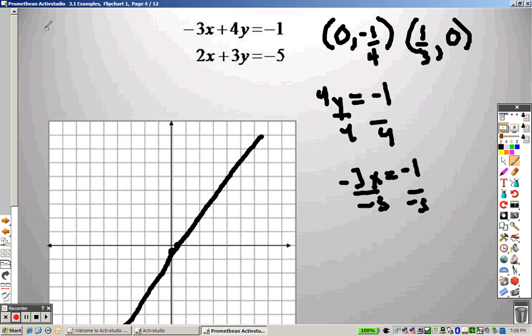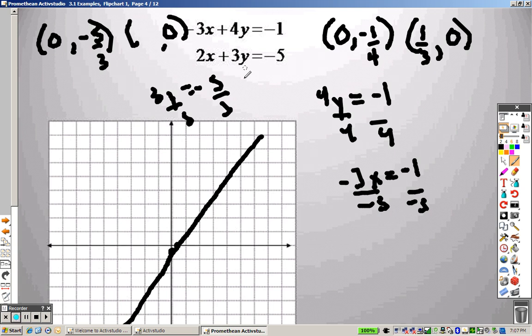I do the same thing for the next equation. I put in 0 for x. So that is like saying you have 3y equals negative 5. I divide both sides by 3, and I get negative 5/3. Then I plug in 0 for y, and I end up getting, dividing by 2, negative 5/2.